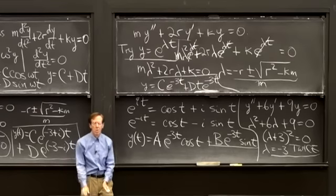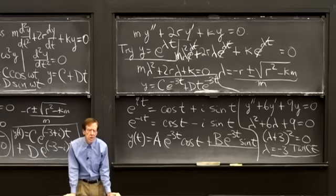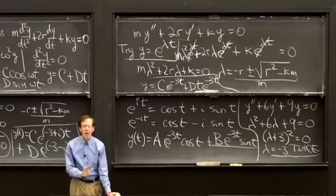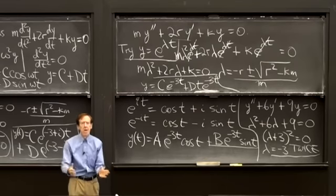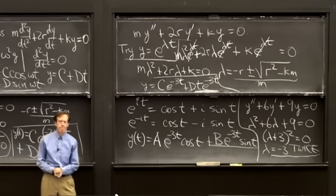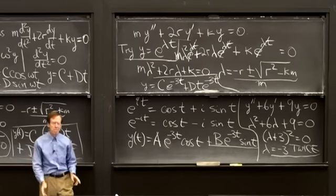In conclusion: linear constant coefficient differential equations are completely solved by trying e^(λt) and finding λ. If λ is real, we get exponentials. If λ is imaginary (complex), we get sines and cosines via Euler's formula. If λ is a repeated root, an extra factor of t appears. That's the complete picture — differential equations with constant coefficients we can handle.